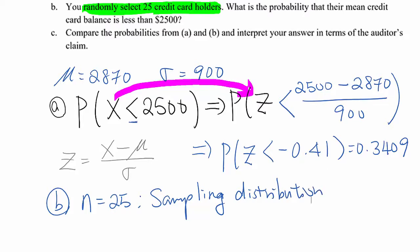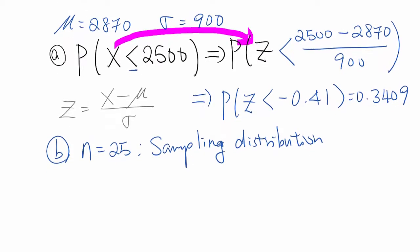So, we need to determine new mu which means a mean value and new sigma. So, mu x will be, we always fix the mean value. So, same as 2870. And then, sigma x will be 900 over root 25 which is 180.